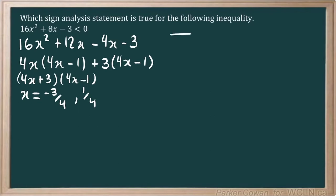So now we know our roots. We can go ahead and write these down on our number line here. And so we have 1 over 4 and negative 3 over 4.